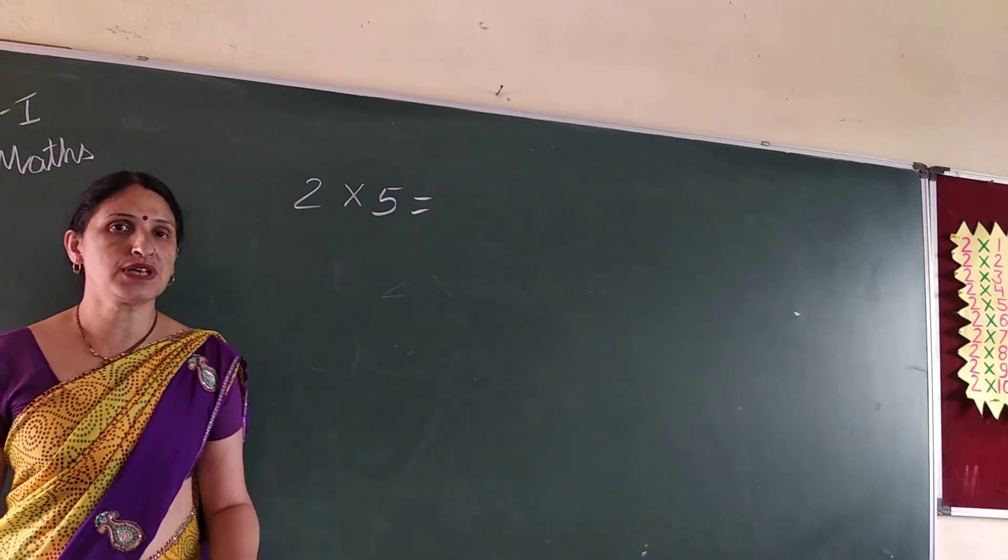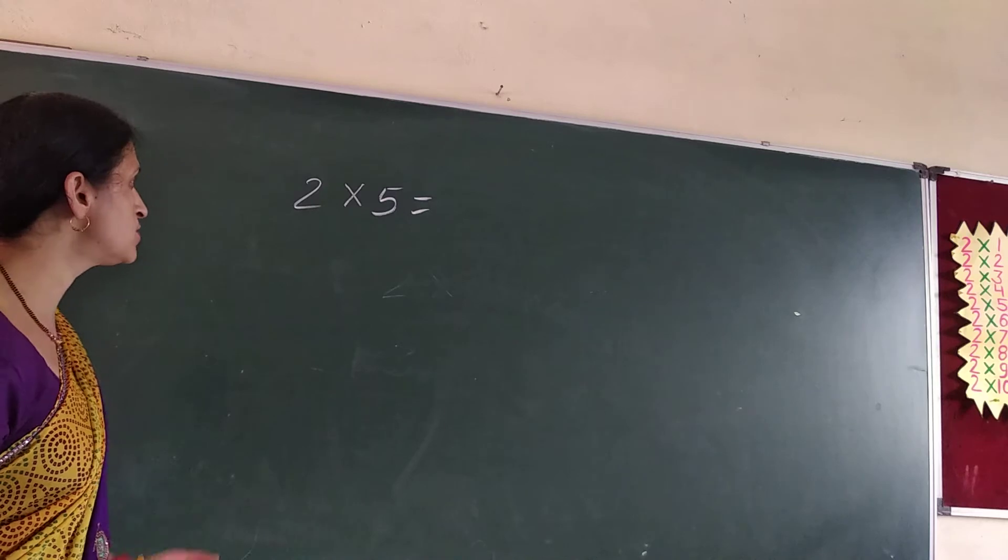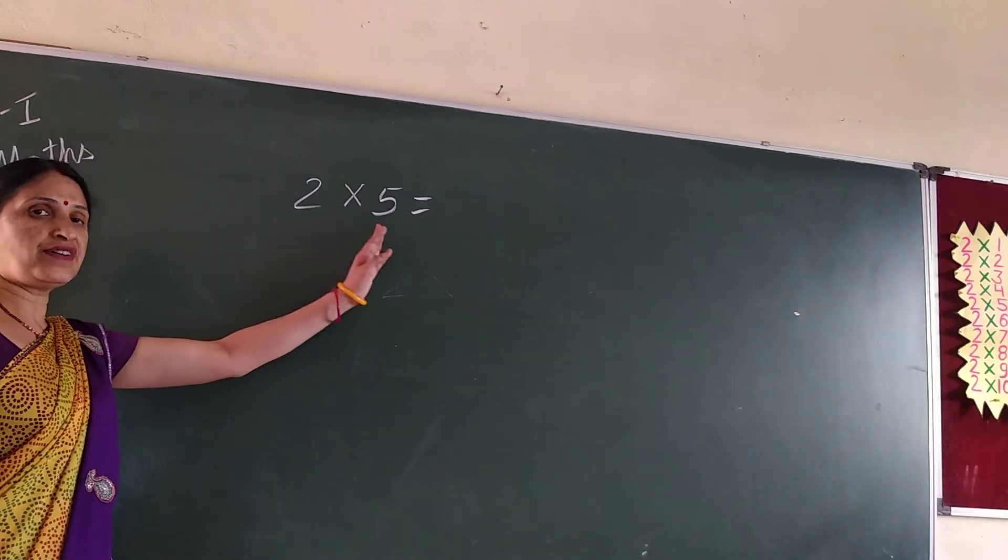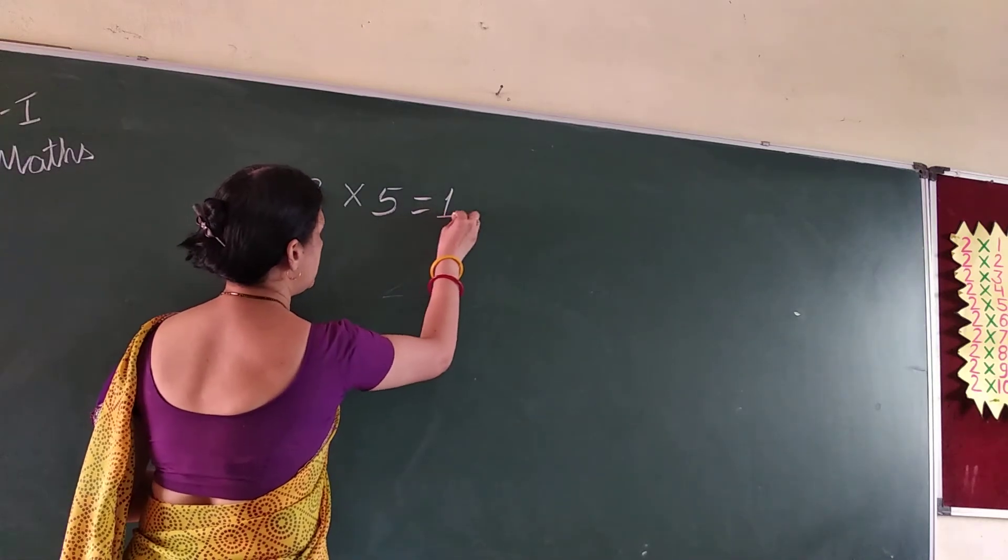2 1's are 2, 2 2's are 4, 2 3's are 6, 2 4's are 8, 2 5's are 10. So write 10.